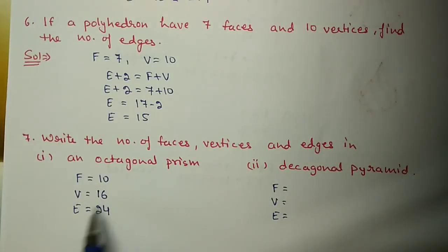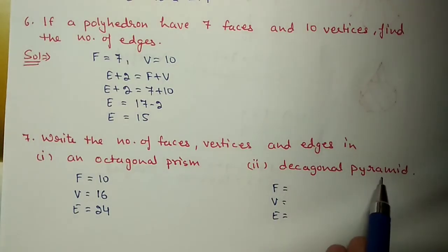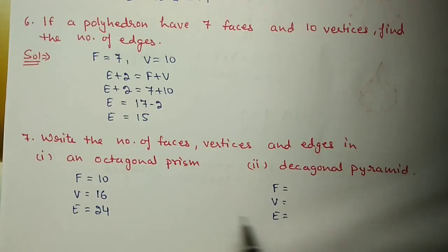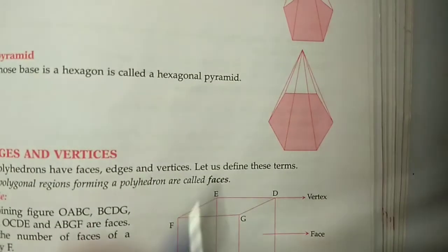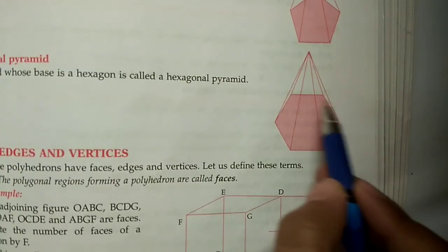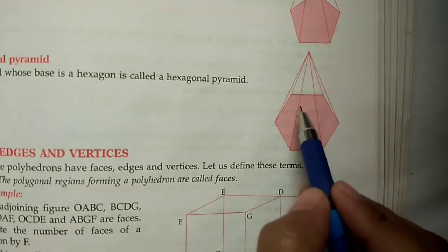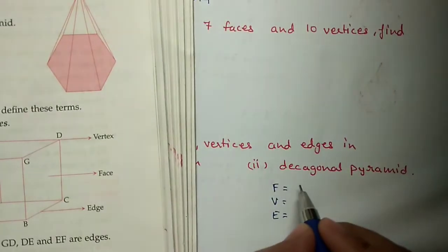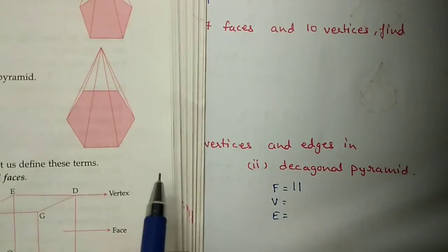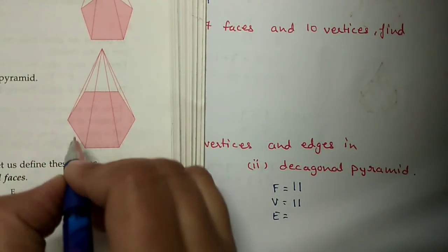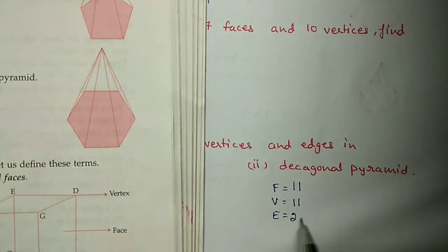So the octagonal prism has ten faces, sixteen vertices and twenty-four edges. For the decagonal pyramid - decagonal means ten sides - there is one base plus ten triangular faces meeting at a point, so eleven faces total. Vertices: ten at base plus one at top - eleven. Edges: ten at base plus ten slant edges - twenty edges.